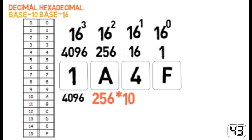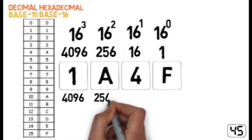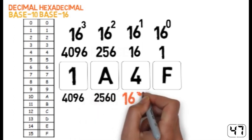Then we multiply A, which is 10, by 256, giving us 2560.